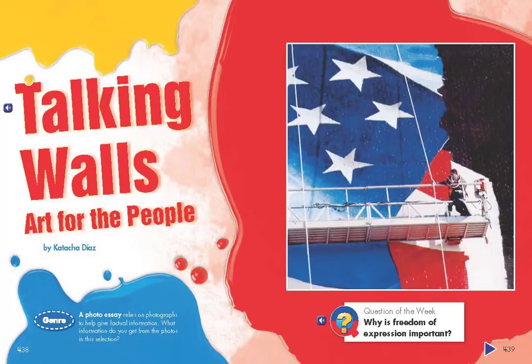Talking Walls: Art for the People by Katasha Diaz. Genre: A photo essay relies on photographs to help give factual information. What information do you get from the photos in this selection?